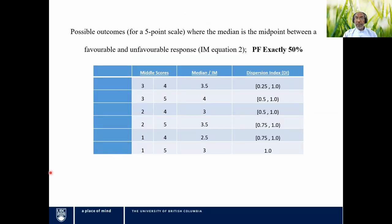When the number of responses is even and the median falls between a favorable and unfavorable response on a five-point scale, possible mid-score pairs include 3 and 4, 3 and 5, 2 and 4, etc. The interpolated median and standard median are identical in these cases, and the expected range of the dispersion index is provided for each. Notably, if the median falls between values 1 and 5, with no 2s, 3s, or 4s, the dispersion index reaches the maximum of 1.